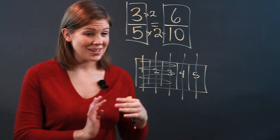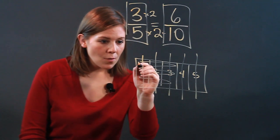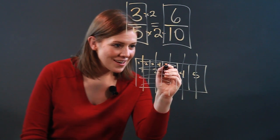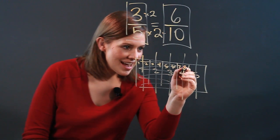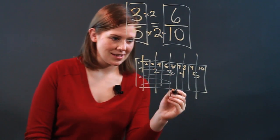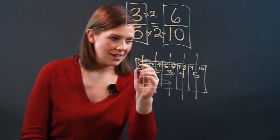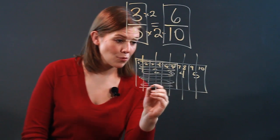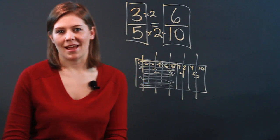We split them in half to make 2 times as many. So now we have 1, 2, 3, 4, 5, 6, 7, 8, 9, 10 of those pieces. And as you can see in coloring in the same 3 fifths, we've colored in 6 of the 10.